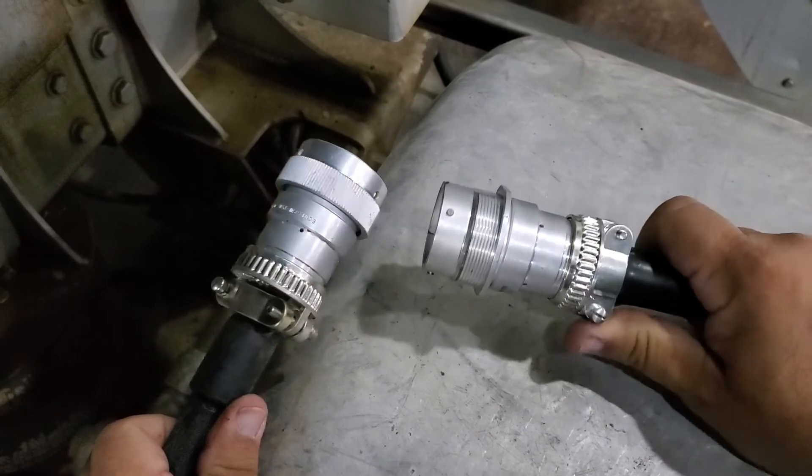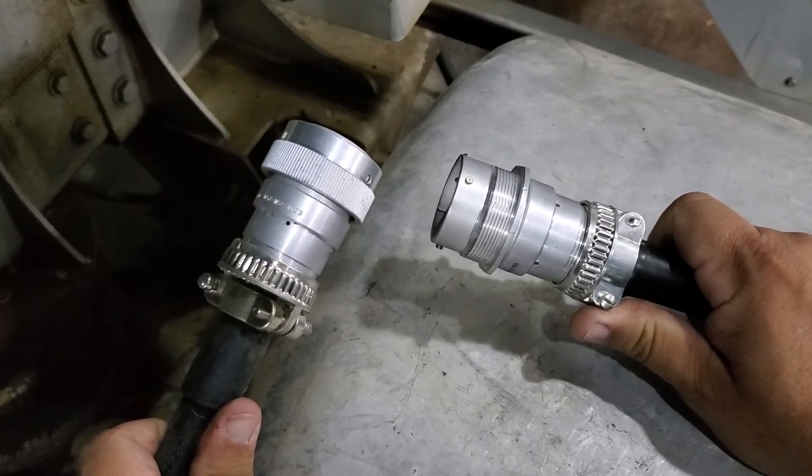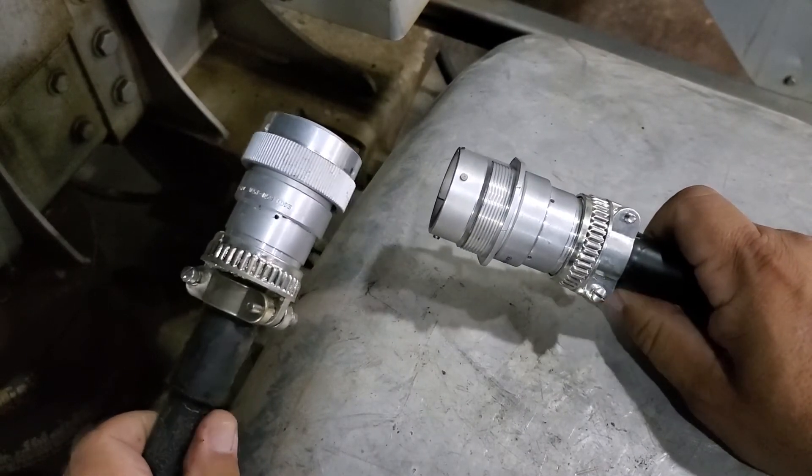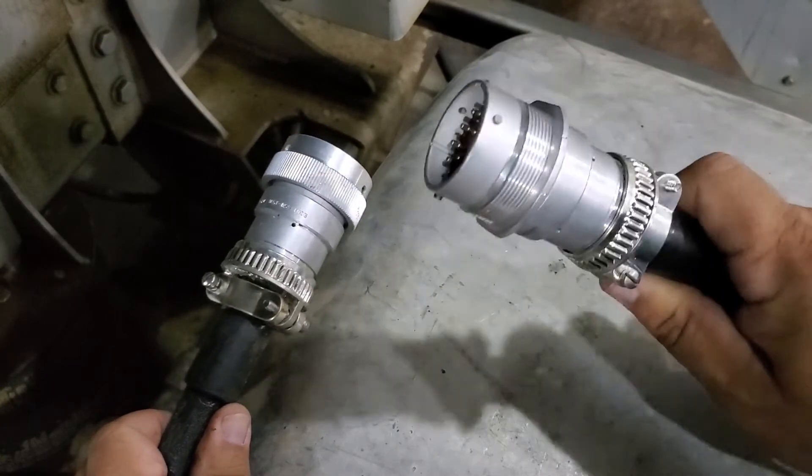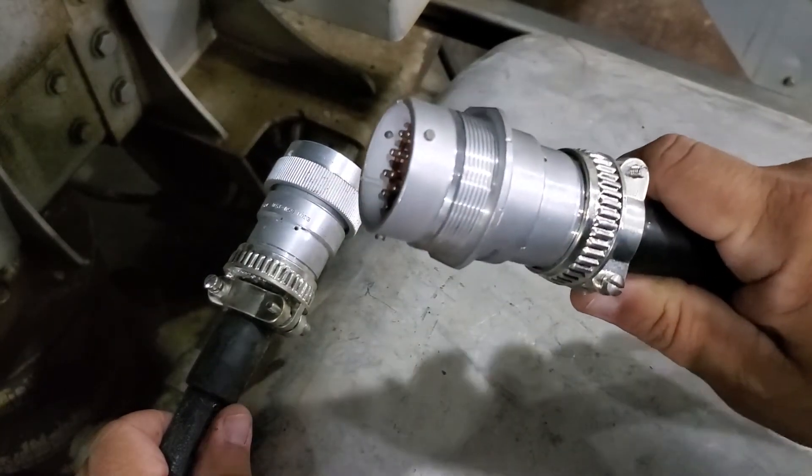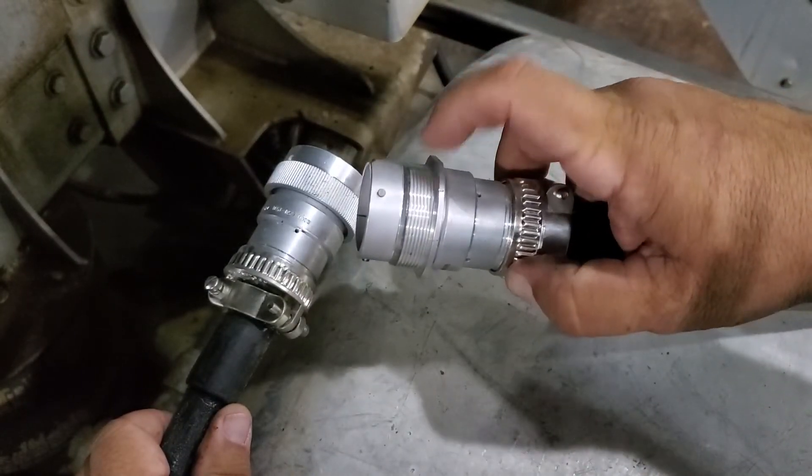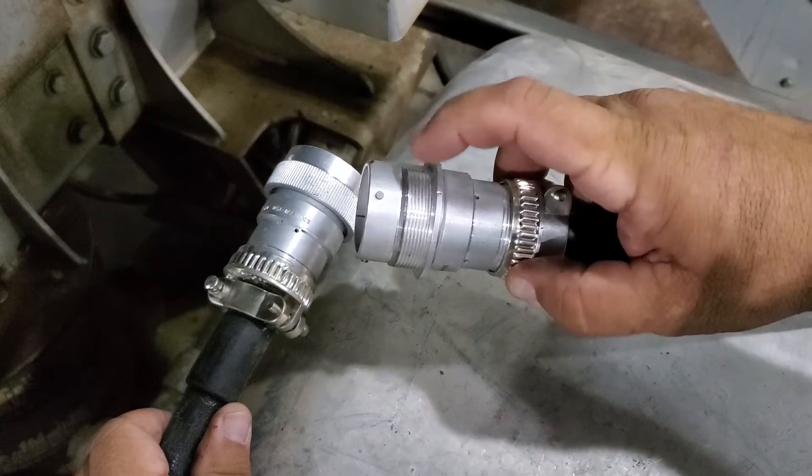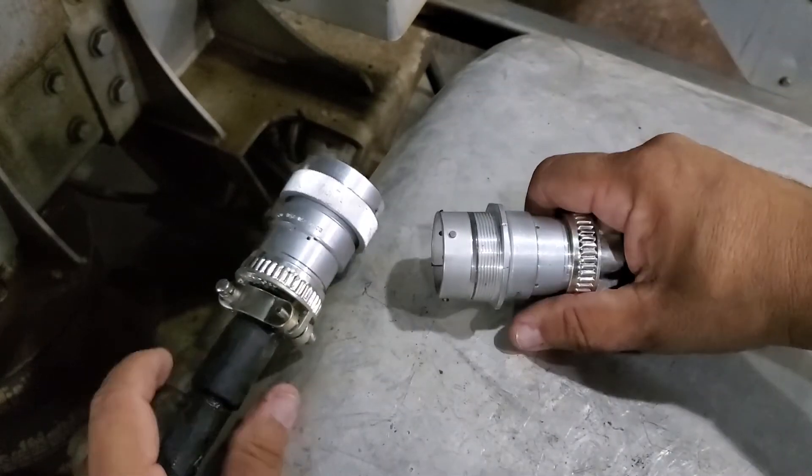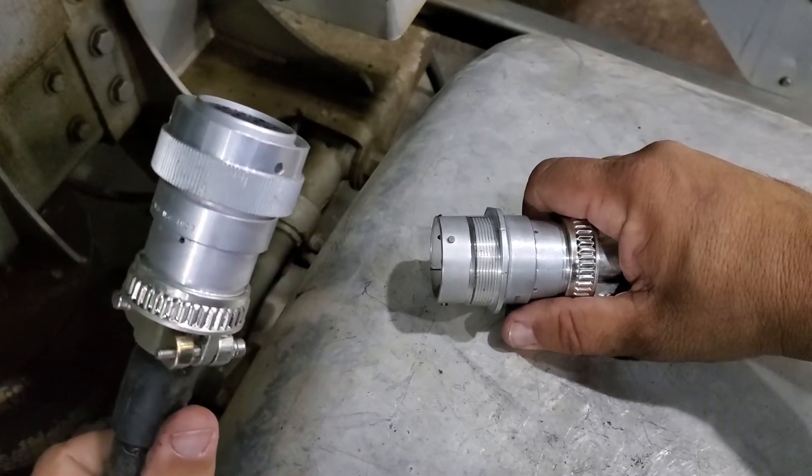Okay, so now I've got the new connectors installed. I've got the bulkhead side here, inserts into the frame, and then on this threaded part there's a locking nut that goes on and holds it into place. Then of course this goes on and connects to it.